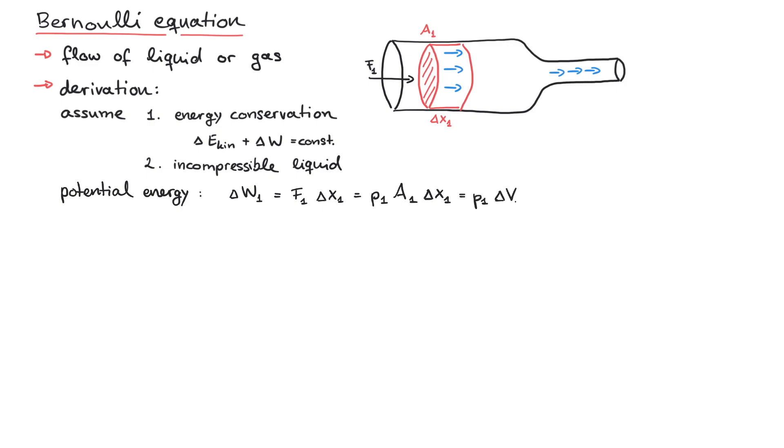Then the combination of the cross-section and the displacement delta X1 is a volume element delta V1. So the work done by a flow of fluid is pressure times the volume element.